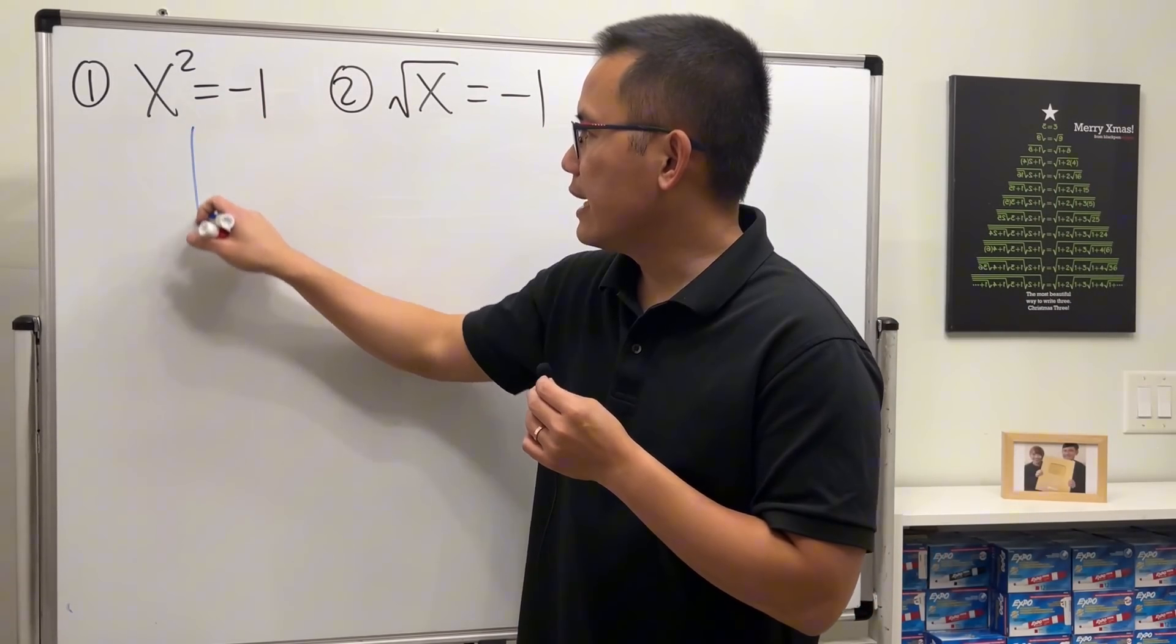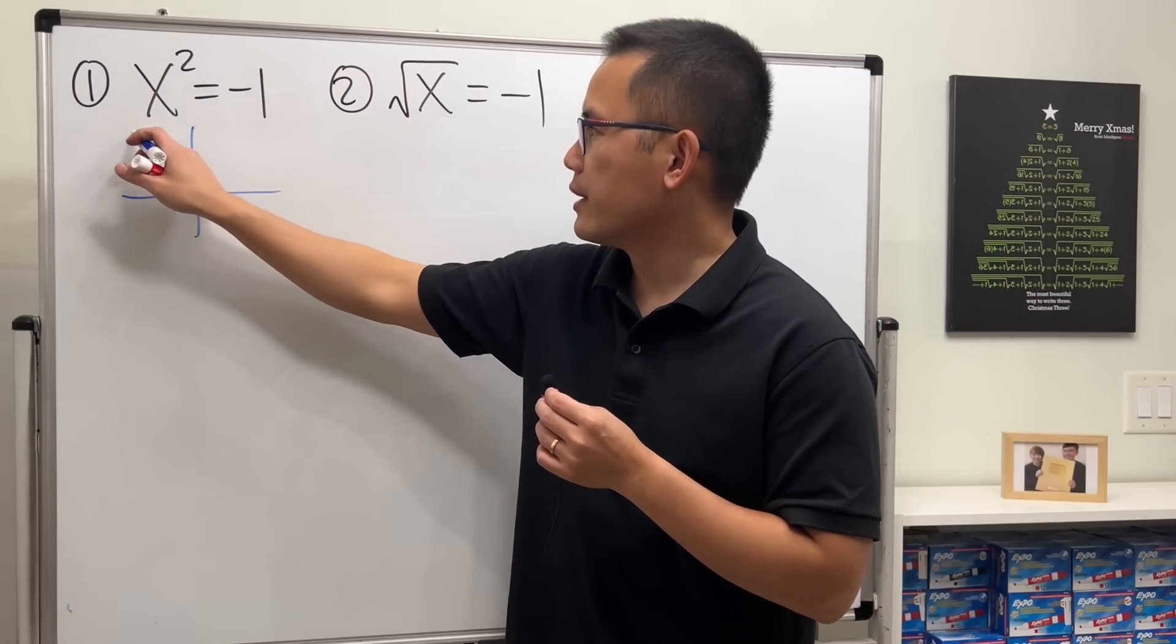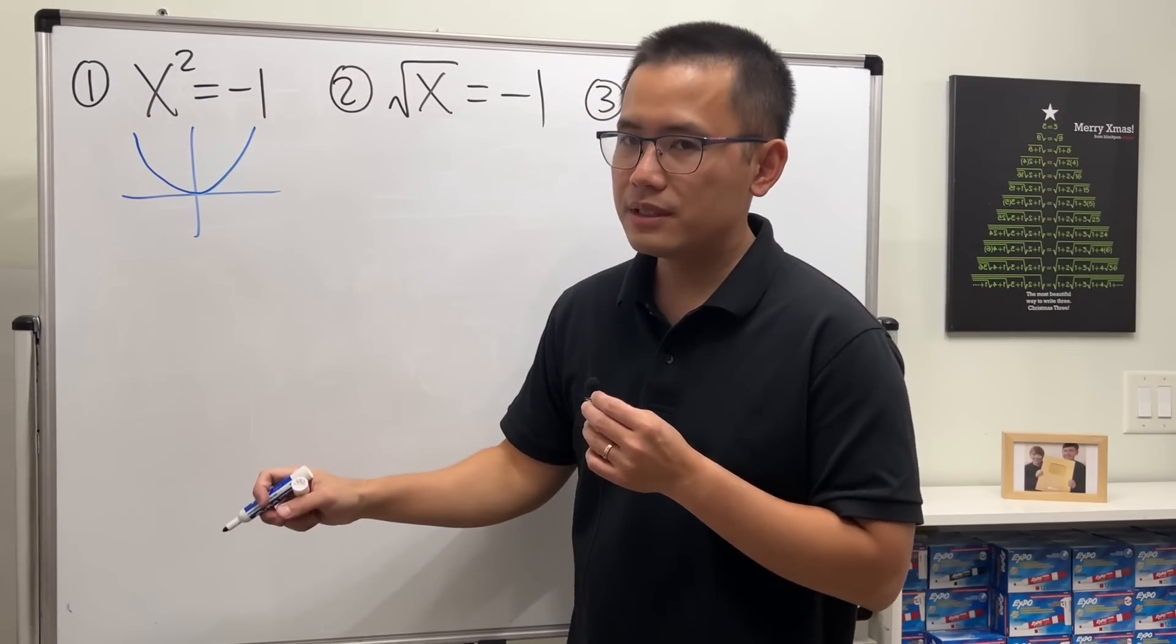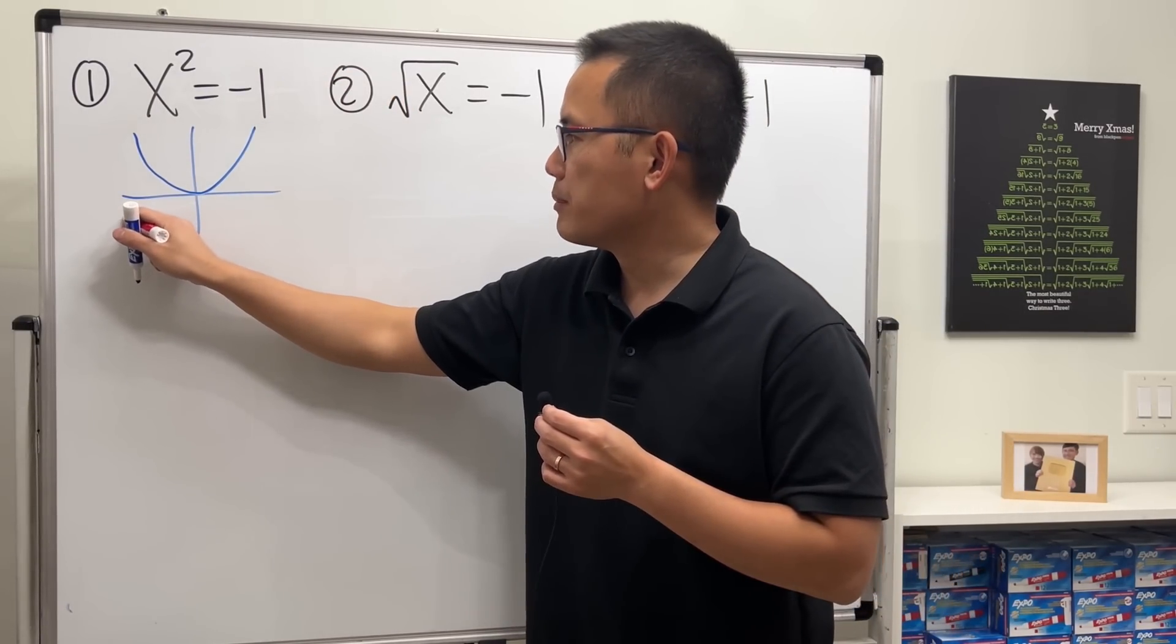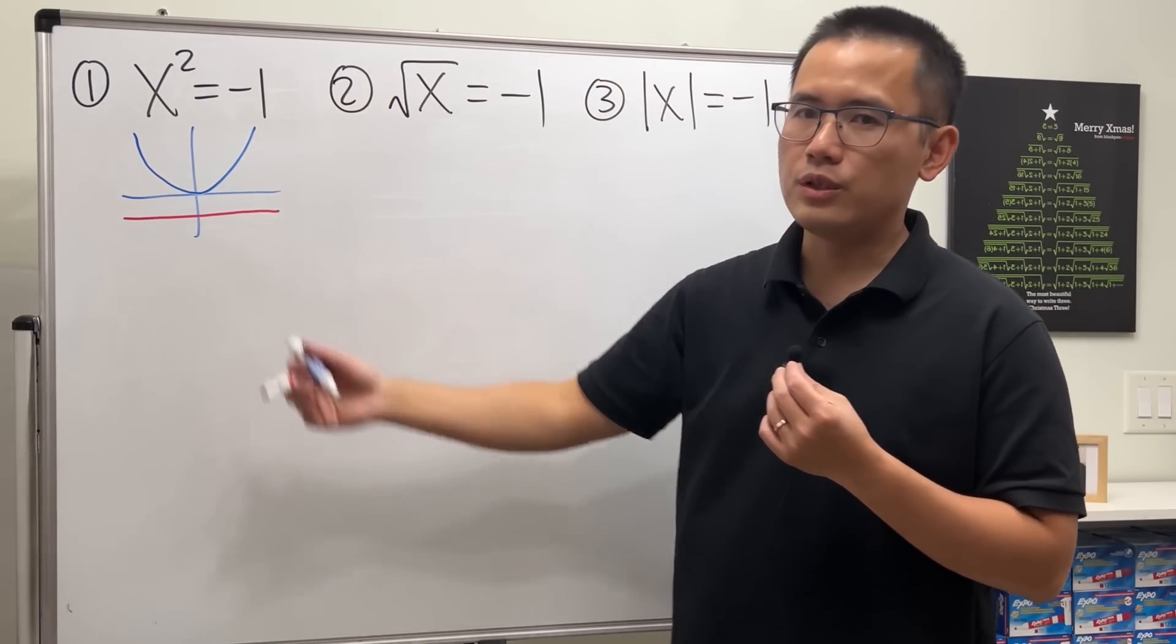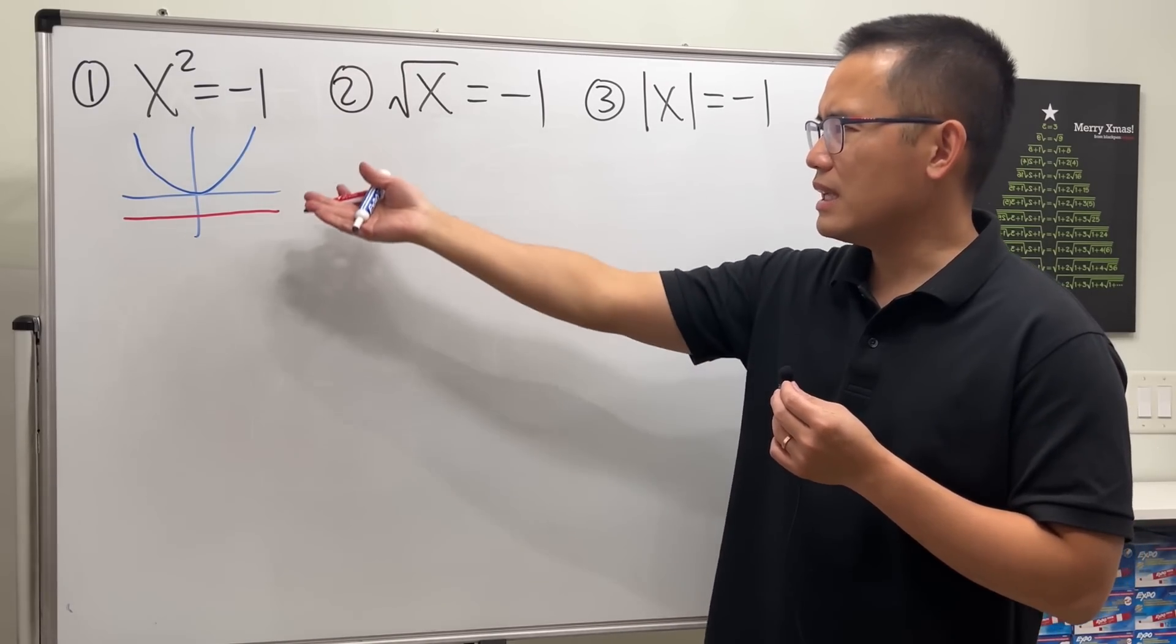For example, the first one, if we take a look at x squared, which is our girlfriend parabola, looks like this. Negative one is somewhere down below here. You see they don't cross each other, so that means it has no solution.